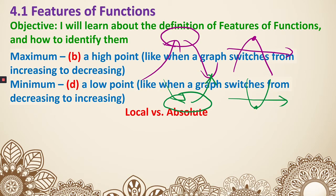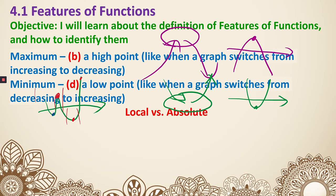We also have the concepts of local and absolute. We can have a local maximum and local minimum. For example, with a graph that goes up and down multiple times, a local minimum just means in that small portion it is a minimum — but it may not be the minimum for the whole graph. Not all local minimums or maximums can be absolute, but all absolute ones can be considered local as well.